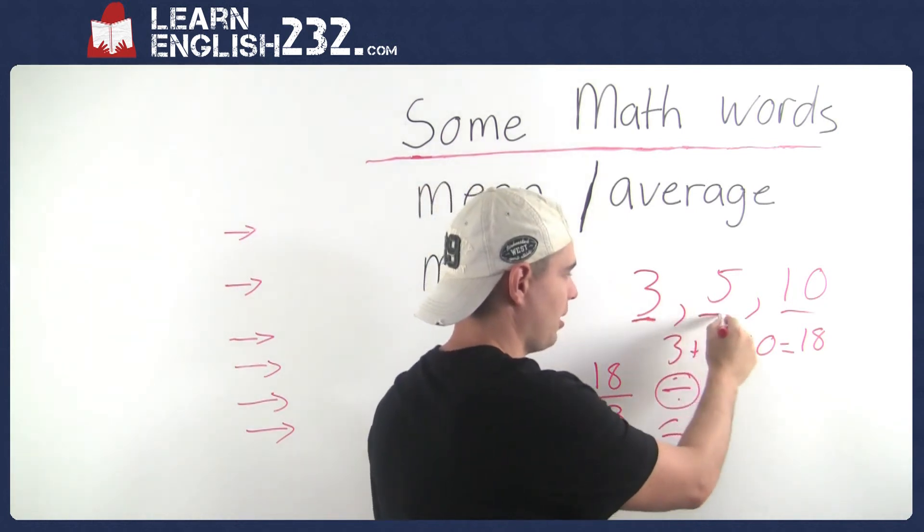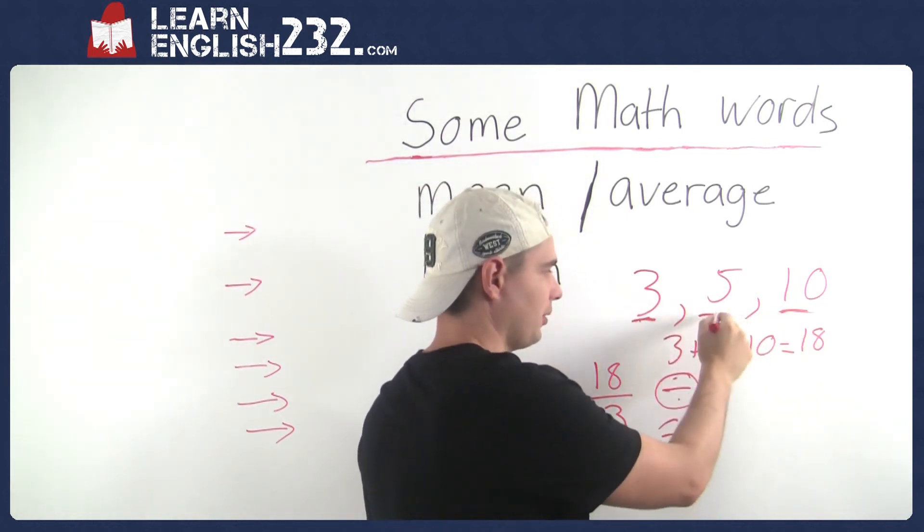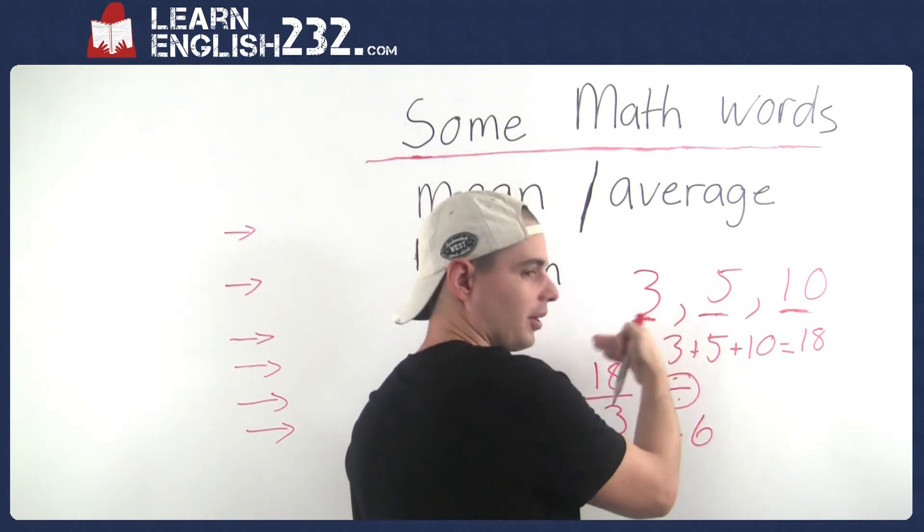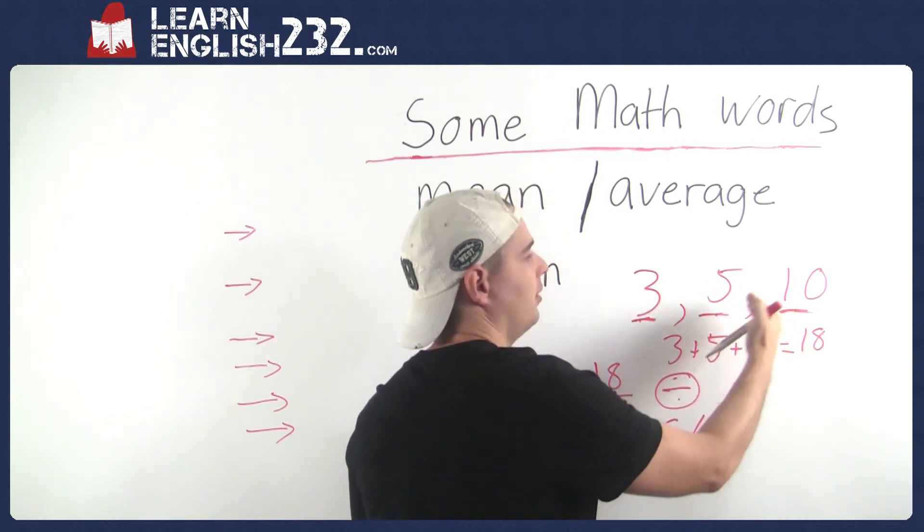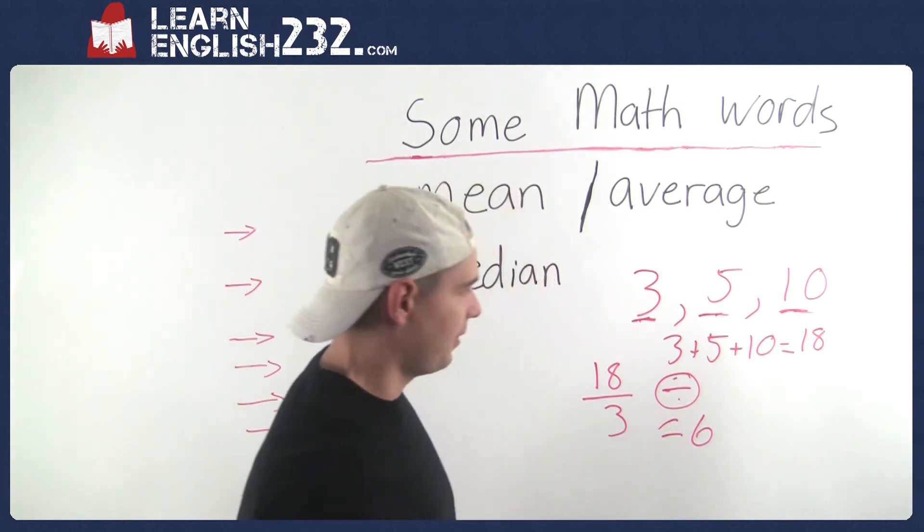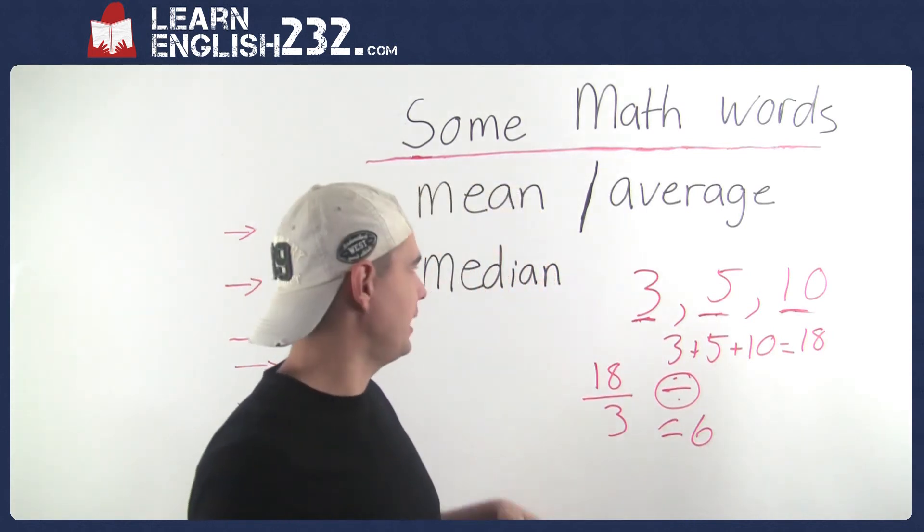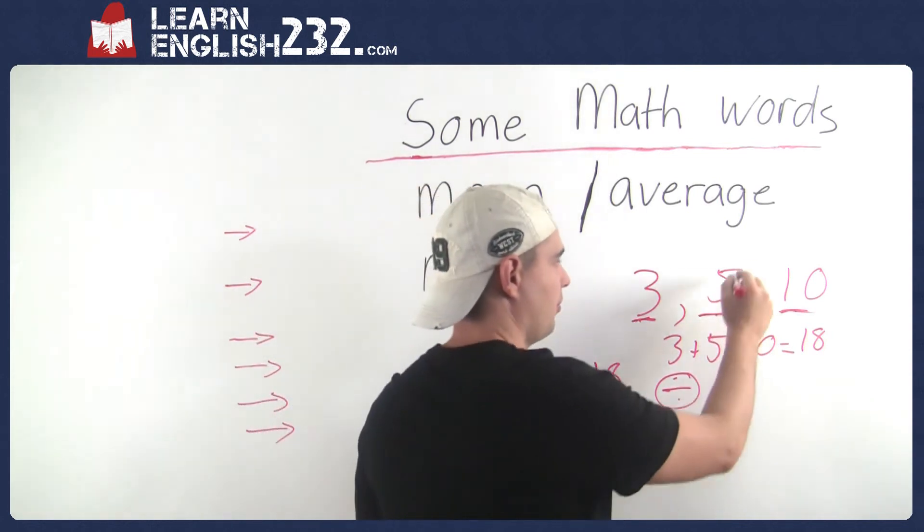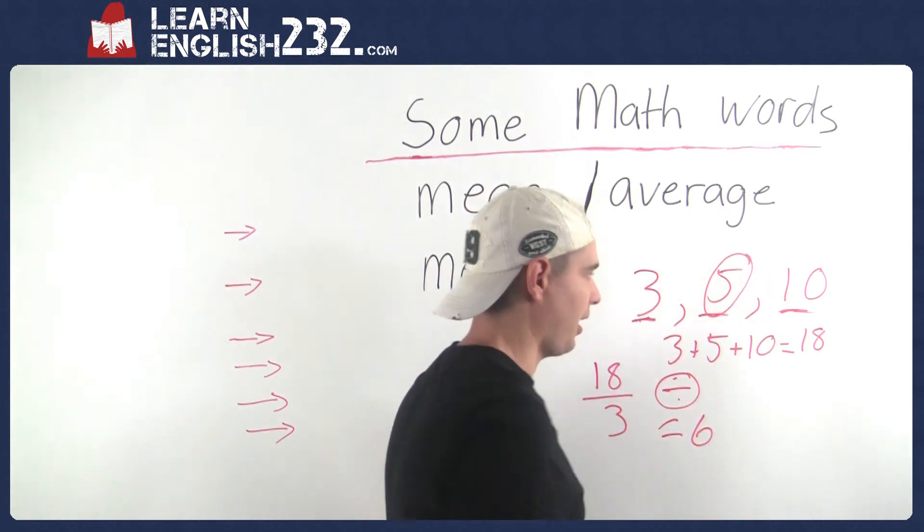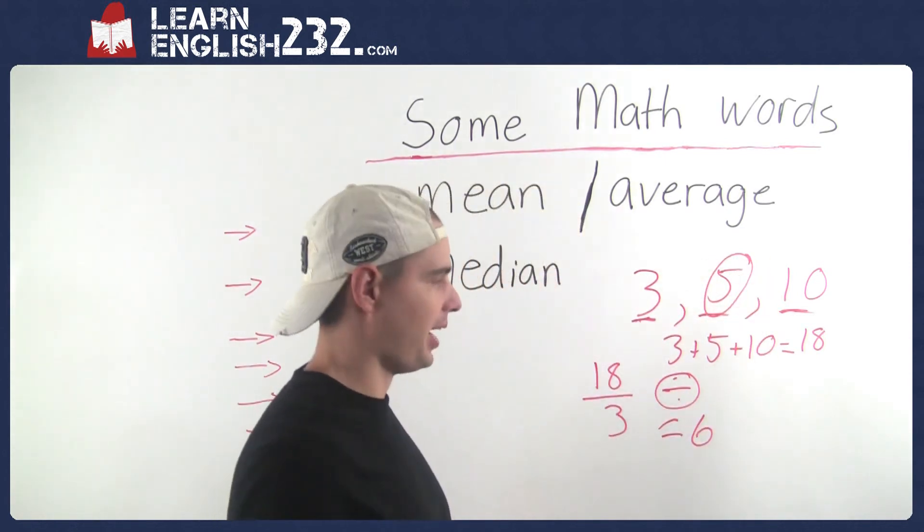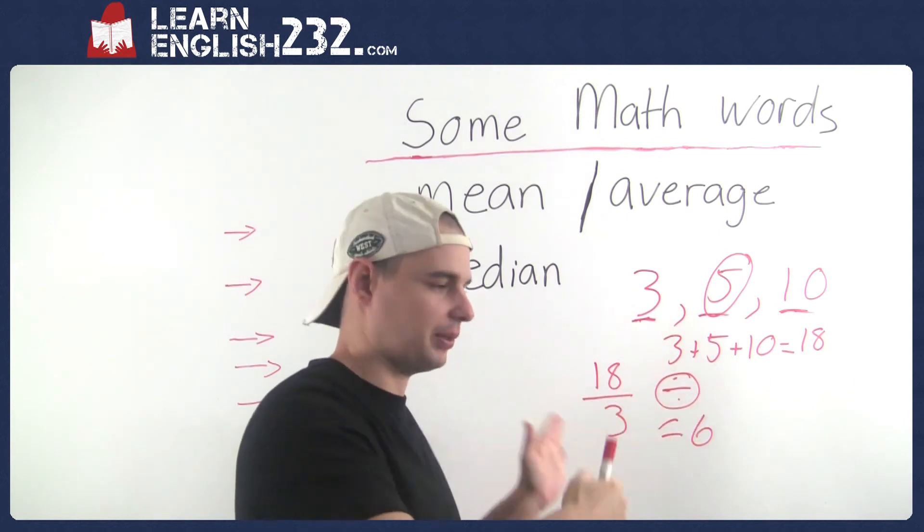So all you have to do in this case is line them up. So there's three numbers, and these are in order from lowest to highest. So the lowest one's here, then the middle one, then the highest one. The middle number is the median. So the median in this case is five. You don't add them up and divide it, you just line up the numbers from low to high and take the middle one.